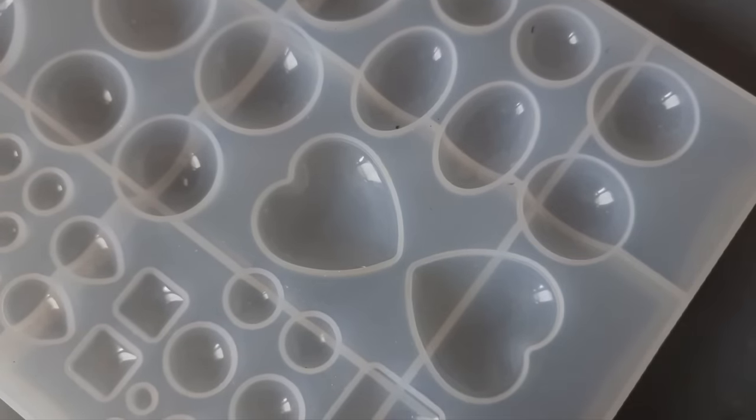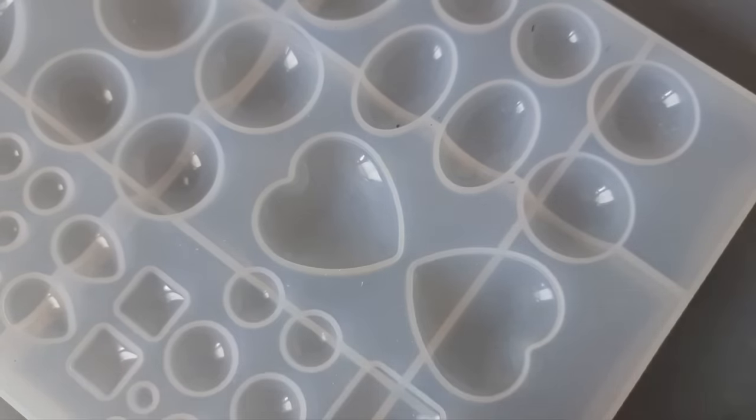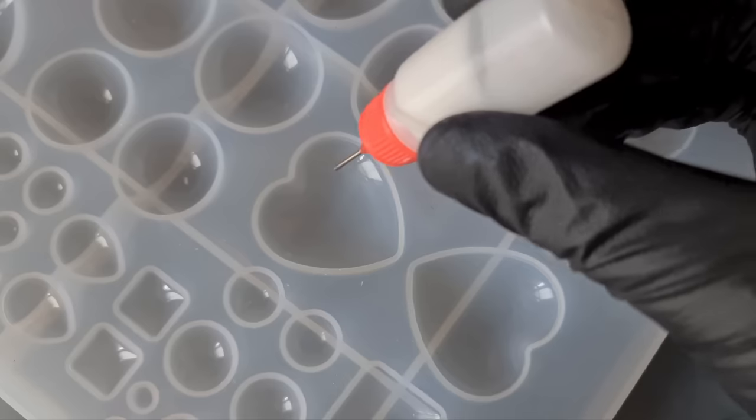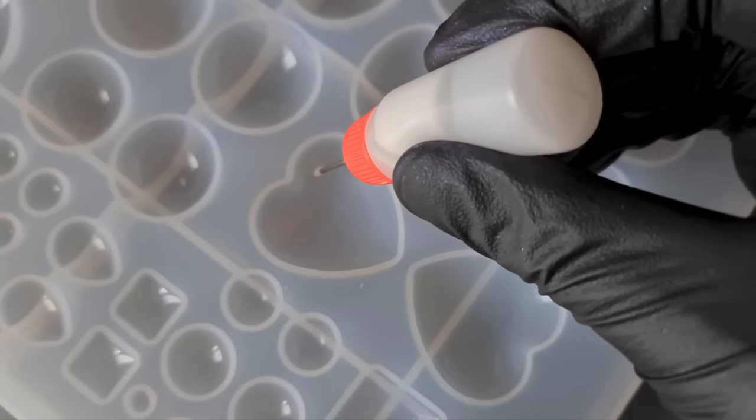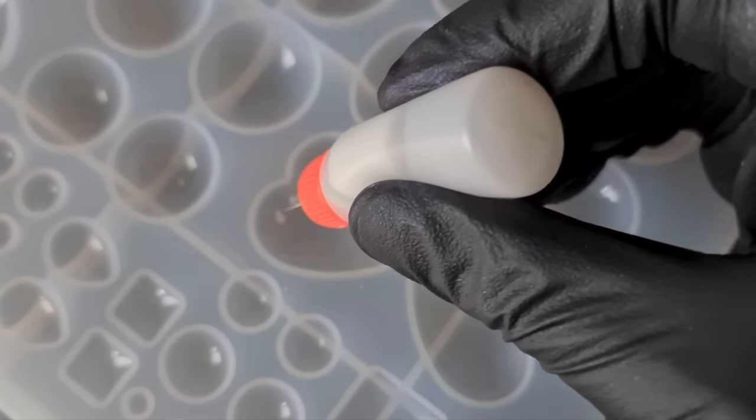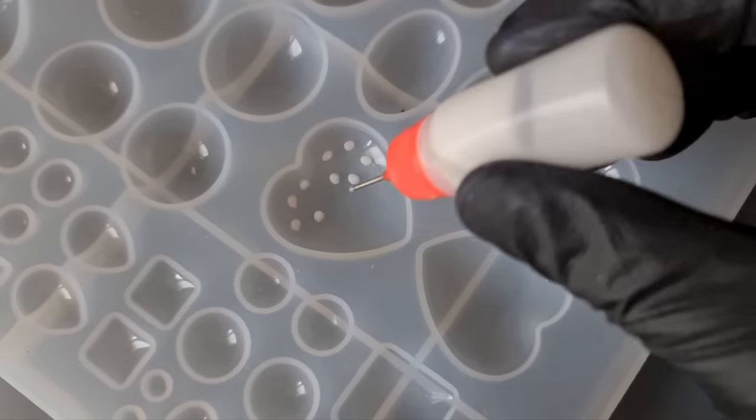I will be using UV resin because it's quick. Now you may have to do a couple of attempts to get this right, but I've got my baby lotion inside my needle tip bottle and all I'm going to do is just apply some dabs on the top half of the heart.